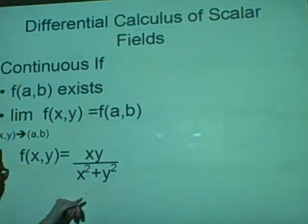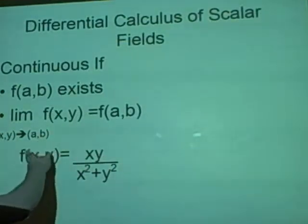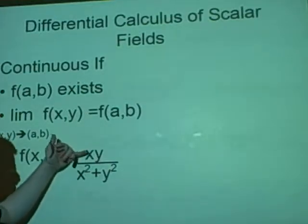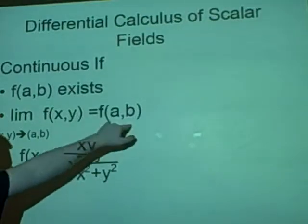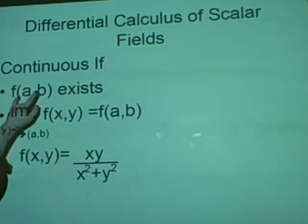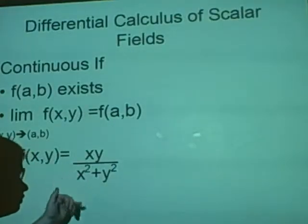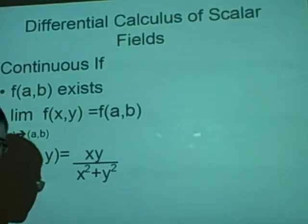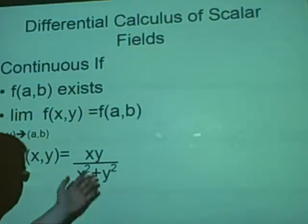Now, a quick example here. If (x,y) goes to (a,b), then we'd have ab over a² plus b². And that is true here, we have f(a,b), so it satisfies this one. And for this one, we can choose any integer. Now, if you look at it carefully, if we chose (0,0), then it would not exist because we'd have 0 over 0. So we'd say it's continuous everywhere except for the origin.